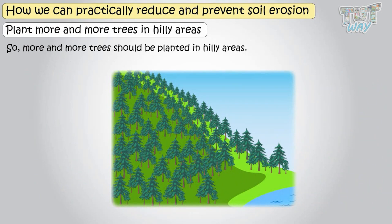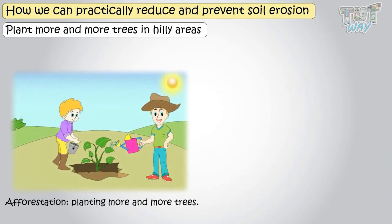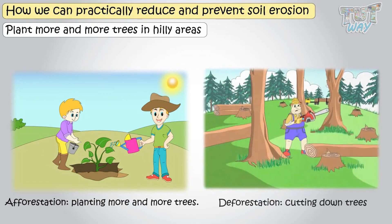Kids, afforestation means planting more and more trees and deforestation means cutting down trees. Now, let's learn another method to prevent soil erosion.